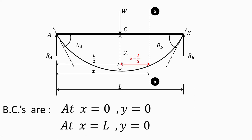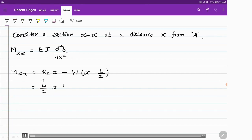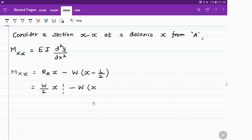Now let us calculate the moment about section XX. Ra times perpendicular distance x is producing a clockwise moment, so it will be a positive moment. W will produce an anticlockwise moment, so W into (x minus L/2) will be the negative moment. So the moment at section XX is Ra·x minus W·(x minus L/2).